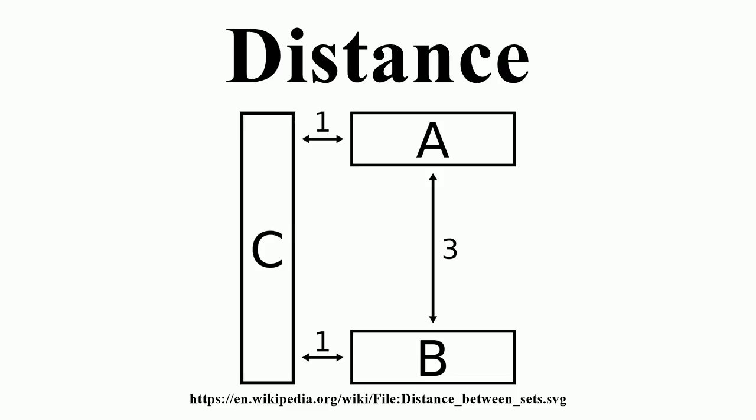The Hausdorff distance is the larger of two values: one being the supremum for a point ranging over one set of the infimum for a second point ranging over the other set of the distance between the points, and the other value being likewise defined but with the roles of the two sets swapped. This distance makes the set of non-empty compact subsets of a metric space itself a metric space. The distance between a point and a set is the infimum of the distances between the point and those in the set. This corresponds to the distance from the set containing only this point to the other set.